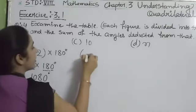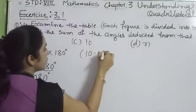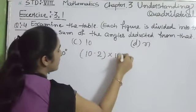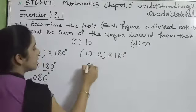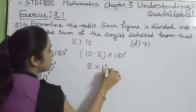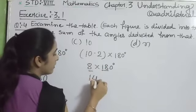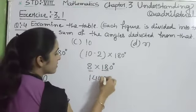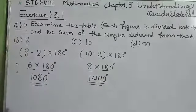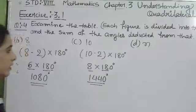For 10 sides, we will add 10 minus 2 into 180. 10 minus 2 is 8 into 180 degrees. So 8 times 18 is 144, add 0, so the answer is 1440 degrees.